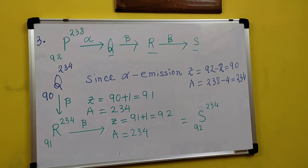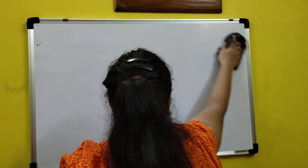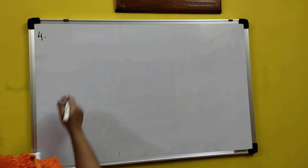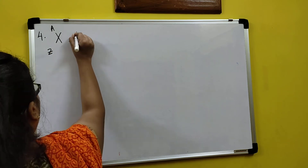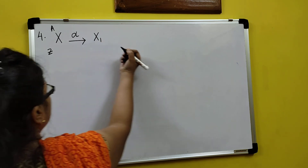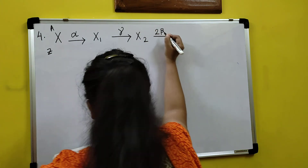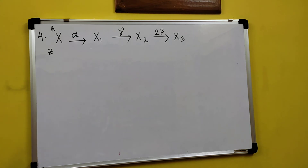Next, question number 4. I am having: X(A, Z), then alpha emission giving X1, then one gamma emission giving X2, then 2 beta emissions giving X3. I need to find X1, X2, and X3. First of all, since there is an alpha emission, alpha emission means the mass number decreases by 4 and atomic number decreases by 2.